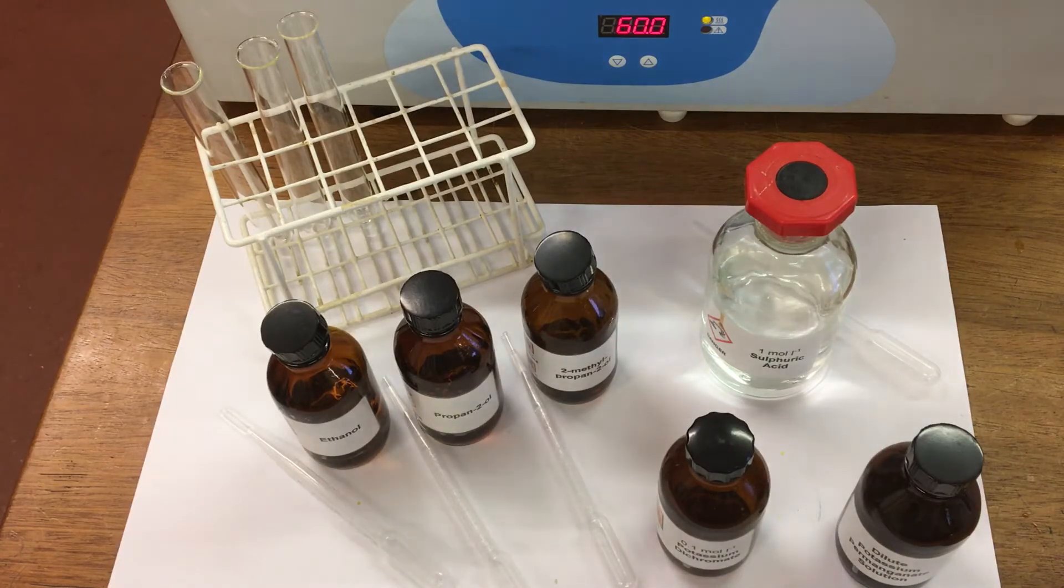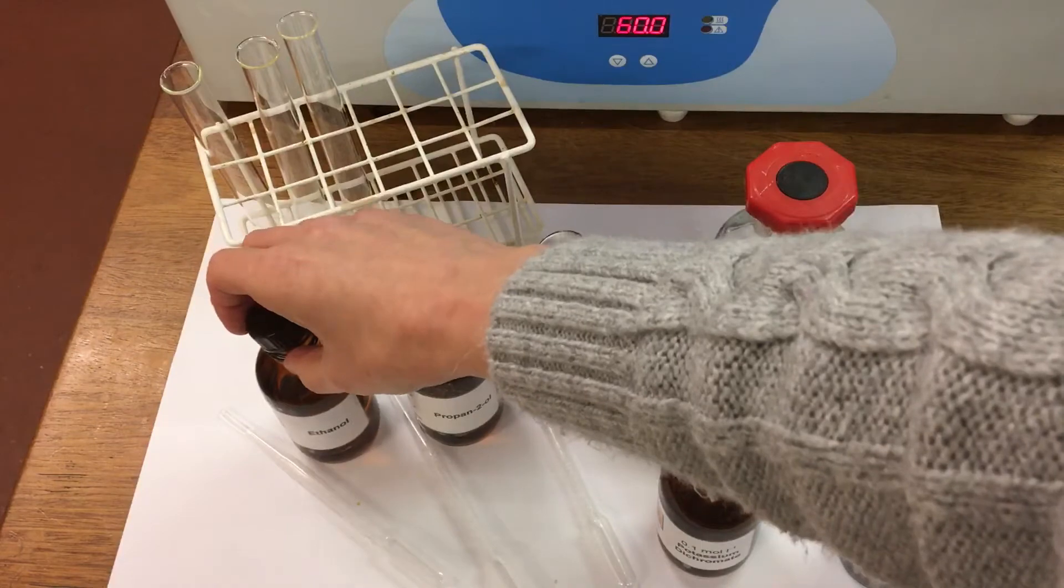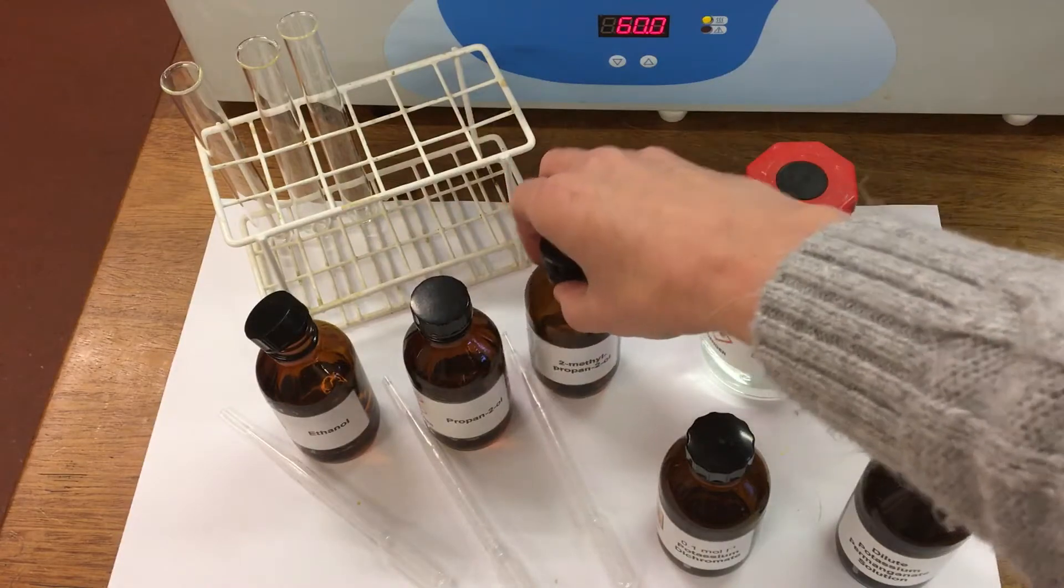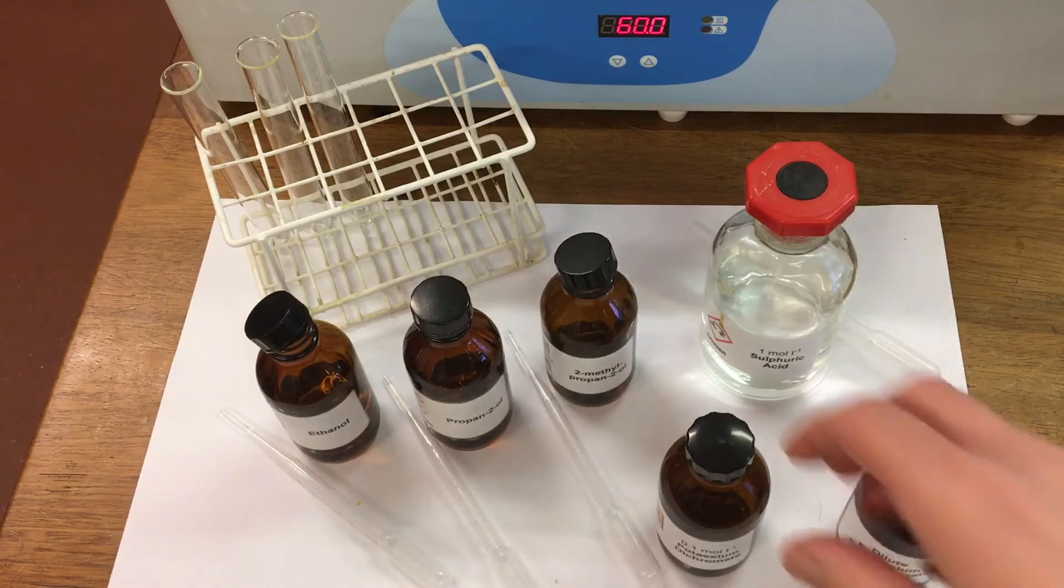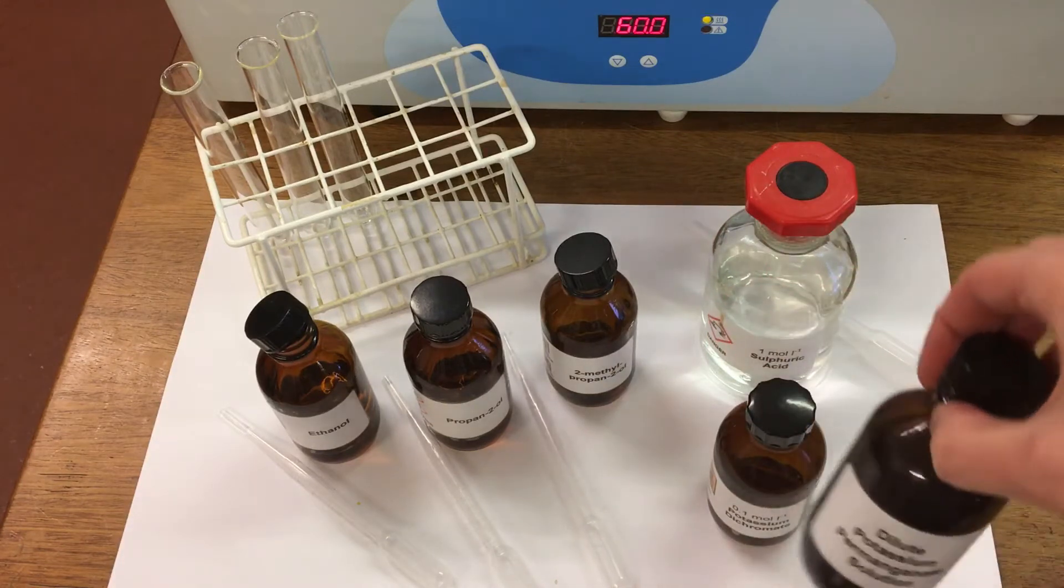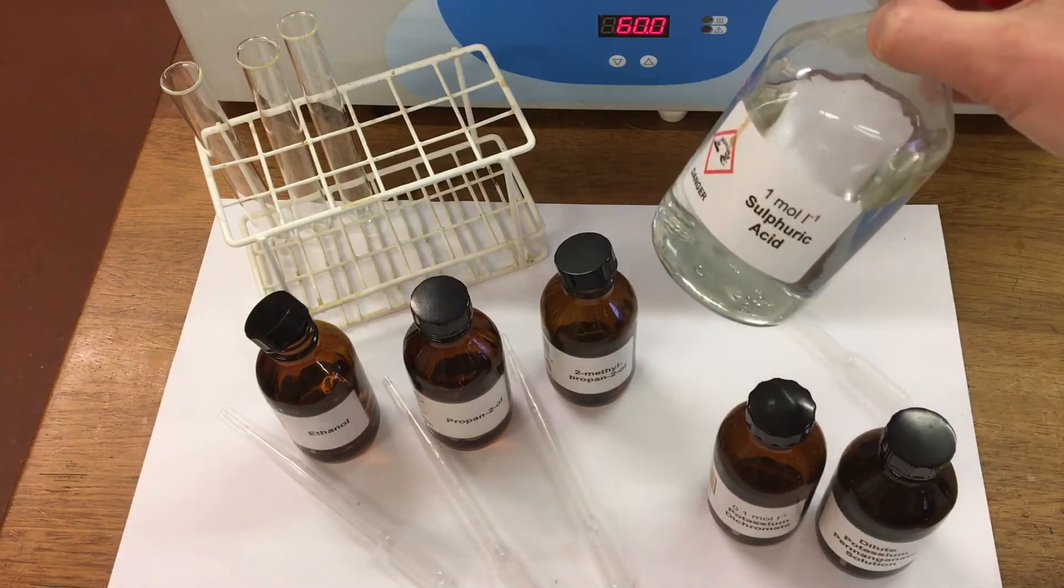In this experiment, we're looking at the oxidation of alcohols. I'm going to use three different alcohols - a primary, a secondary, and a tertiary - and two different oxidizing agents. I'm going to use ethanol, propan-2-ol, and 2-methylpropan-2-ol. Those are the three alcohols. Now we're going to use two different oxidizing agents: potassium dichromate and potassium permanganate, and both of these are going to be acidified with some sulfuric acid.